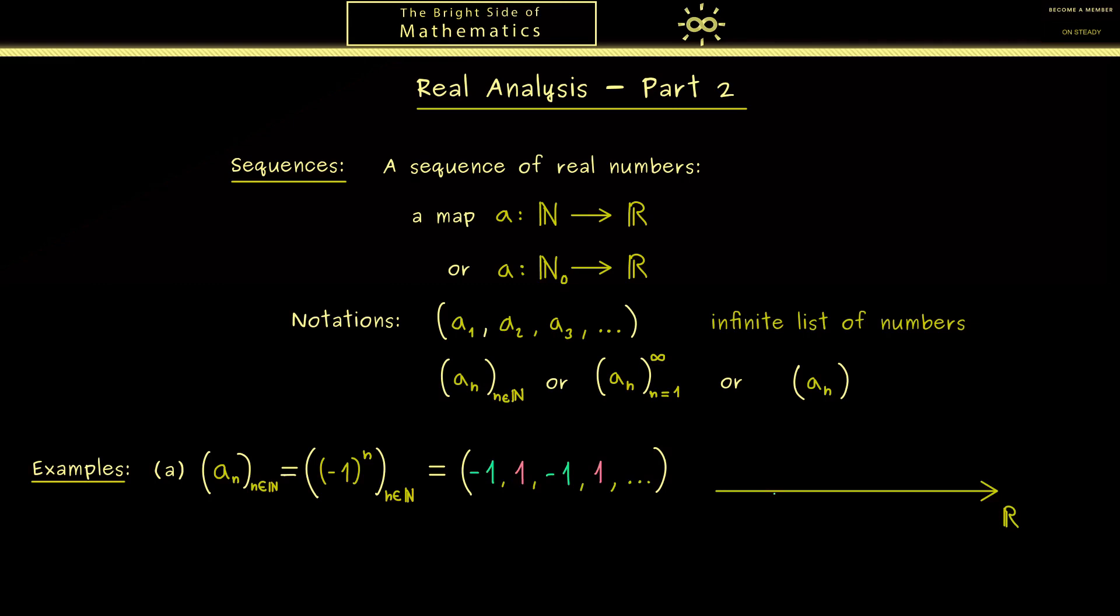Therefore, if we want to visualize this on the number line, we would start at -1, then in the next step jump to +1. Afterwards, for the next step, we jump back to -1, and we continue this procedure with no end. This is always a good way to visualize a sequence on the number line. You can see the sequence as time steps where we hit at each time step a number on the number line.